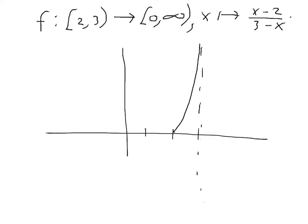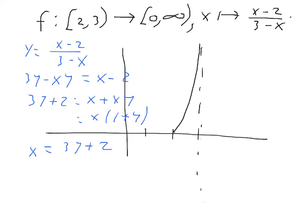But before we go back to the proof, we should do one calculation. Suppose we let y equal x minus 2 divided by 3 minus x. Then we should solve for x in terms of y. We're going to need to use that result in our proof. If we cross-multiply, we get 3y minus xy equal x minus 2. So 3y plus 2 equals x plus xy, which is x times 1 plus y. And so x equals 3y plus 2 divided by 1 plus y. We'll make use of that fact when we do the proof.